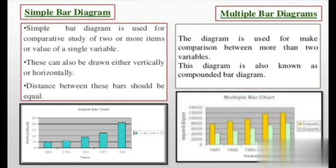Now multiple bar diagram. This diagram is used to make comparison between more than two variables. As you can see, at one place in 1991, two differences were shown at one place, and same goes with 1992, 1993, 1994, and so on. This diagram is also known as compounded bar diagram.